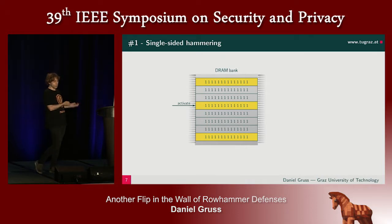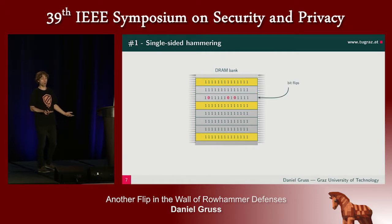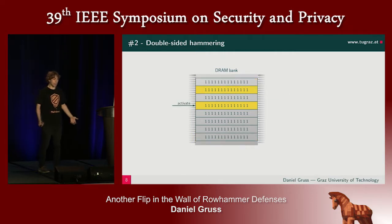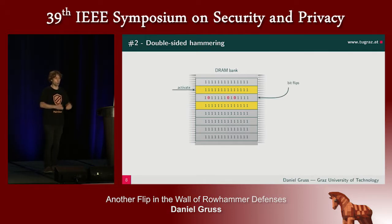If we do single-sided hammering, we just hammer a bunch of rows and expect bit flips next to one of them. In the case of double-sided hammering, we are hammering two rows and we're expecting the bit flips, for instance, between those two or directly next to one of them.